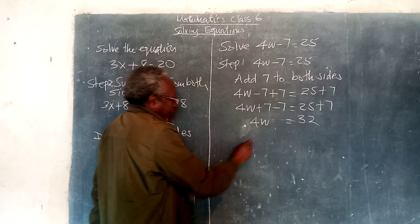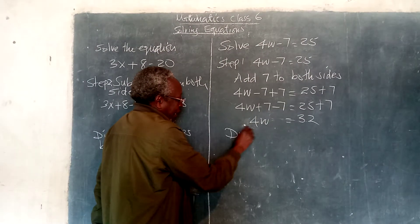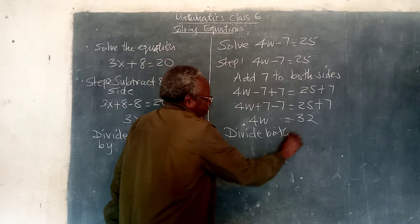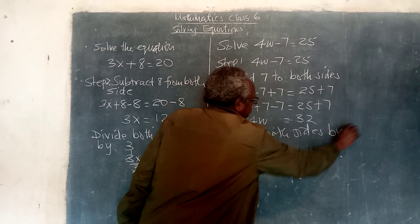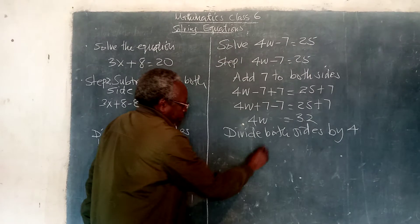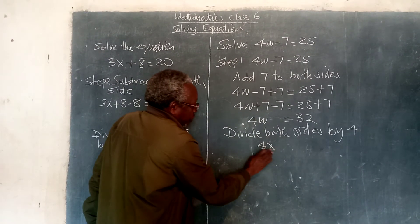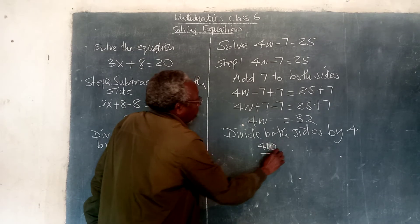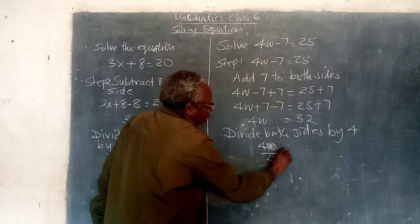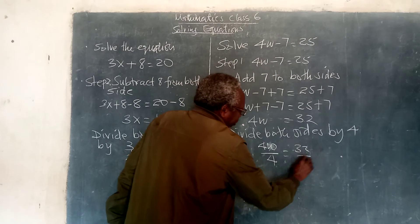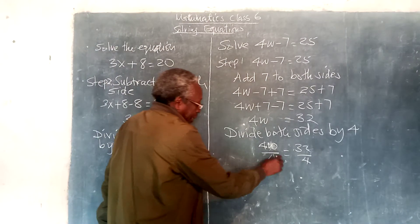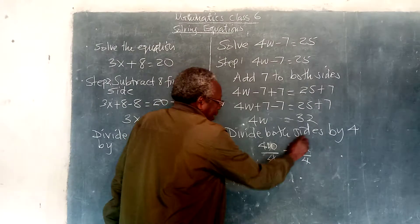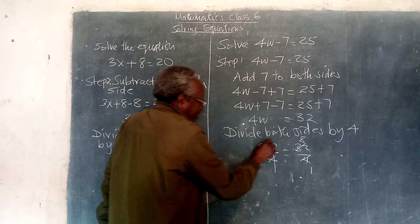Then, when we reach here, the next step is divide both sides by 4. And so, we have 4w over 4 is equal to 32 over 4. So, we simplify, by canceling here, we get here 1, we get here 8, 4 here 1, 4 here 1.